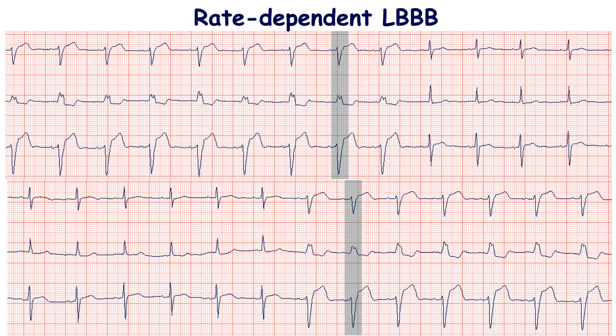At this ECG we can see left bundle branch block occurring at a heart rate of 68 beats per minute and more. This is the critical heart rate. If heart rate is higher than this value, the left bundle branch block is obligatory. At heart rate less than 68 beats per minute, there is normal conduction in the ventricles.